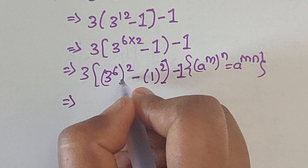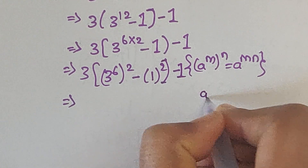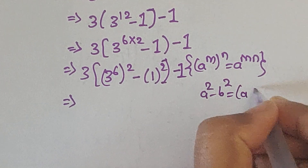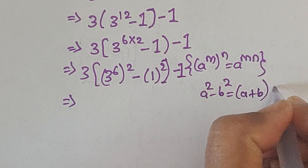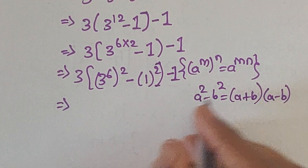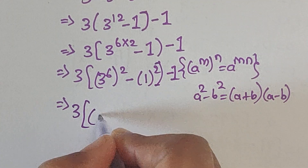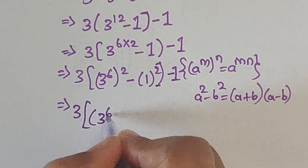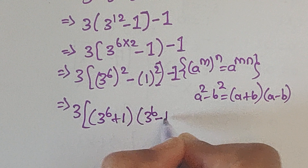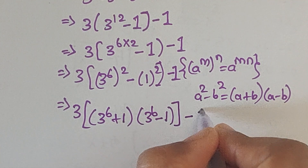We can see this is in the form of a squared minus b squared. We know the formula: a squared minus b squared equals (a plus b) times (a minus b). Using this formula, we can write 3 times (3 to the power of 6 plus 1) times (3 to the power of 6 minus 1), close the bracket, minus 1.